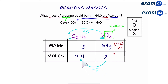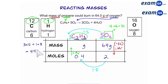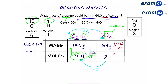Finally, we have moles of propane. The next thing is to work out the mass of propane, so we multiply by the MR of propane. Propane is carbon and hydrogen. Carbon's mass is 12 and hydrogen's mass is 1. Since we have 3 carbons, we do 3 times 12; since we have 8 hydrogens, we do 1 times 8. That gives a total of 44, so the MR of propane is 44. We multiply our moles by 44: 0.4 times 44 gives the mass of propane as 17.6 grams. So 64 grams of oxygen reacts with 17.6 grams of propane.